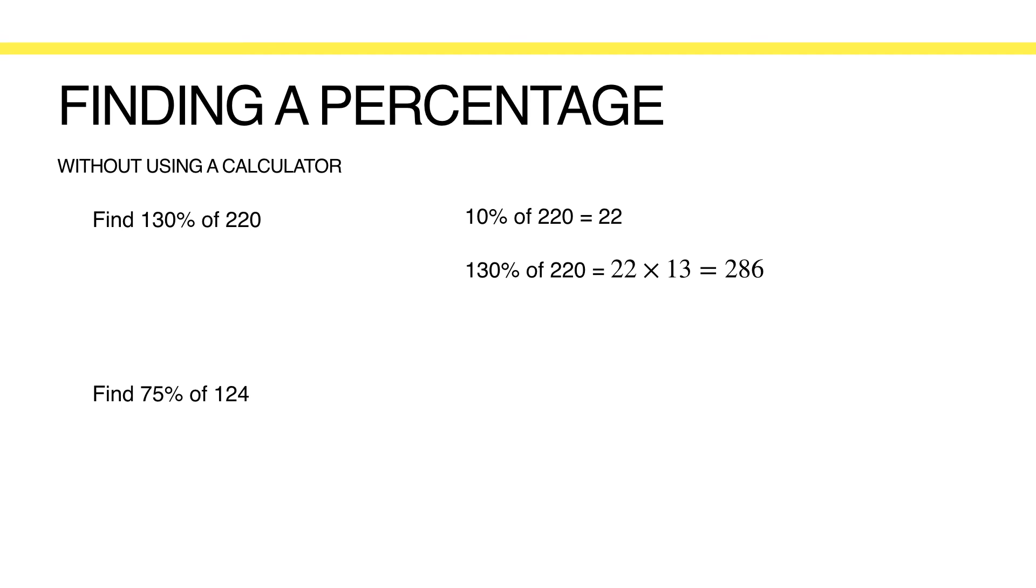Let's look at another example. Say you want to find 75% of 124. Find 25% of 124 first. Remember, 25% is equivalent to 1 over 4, so we can divide 124 by 4 to give 31. 75% is 3 times more than 25%, therefore we multiply the value of 25%, which is 31 in this case, by 3 to give 93. So 75% of 124 is 93.